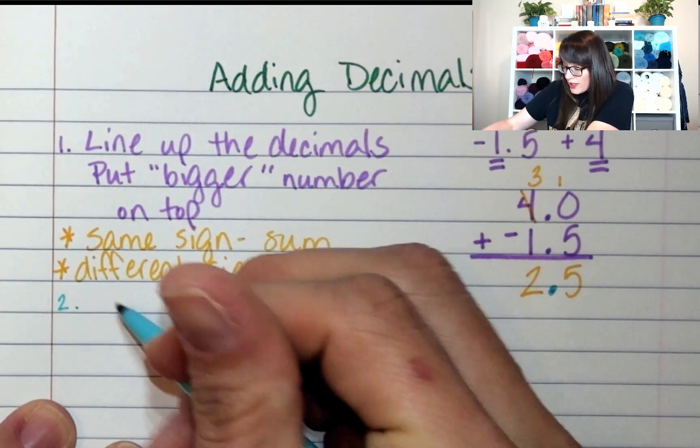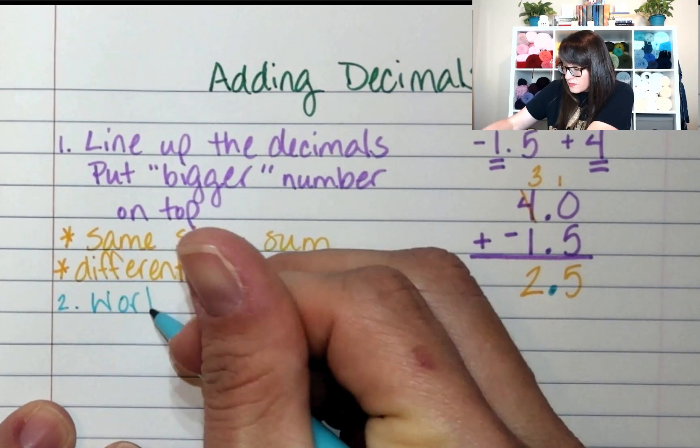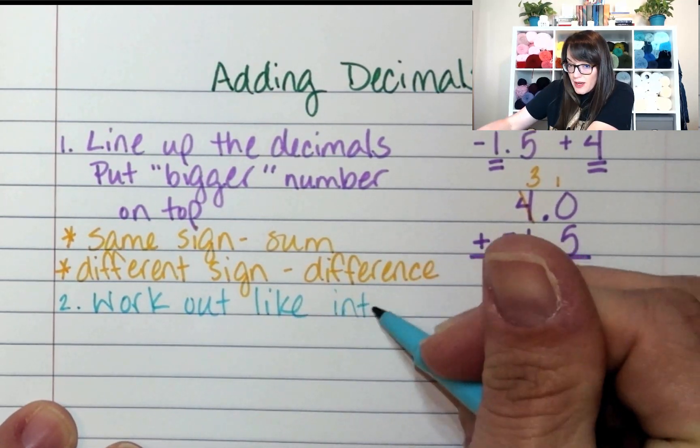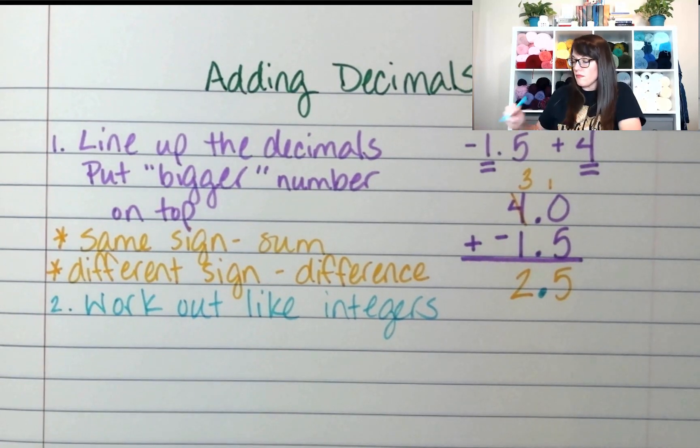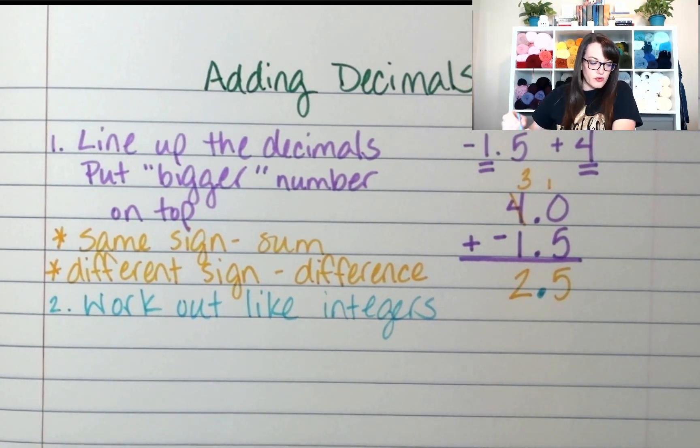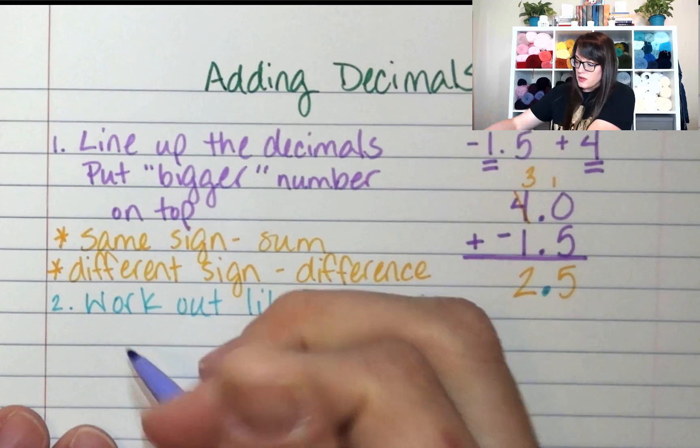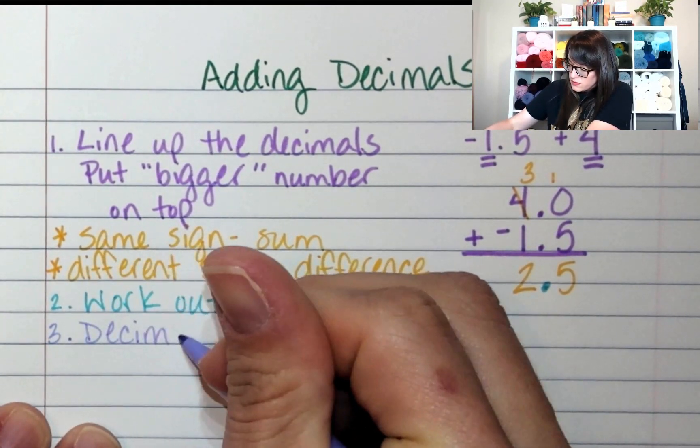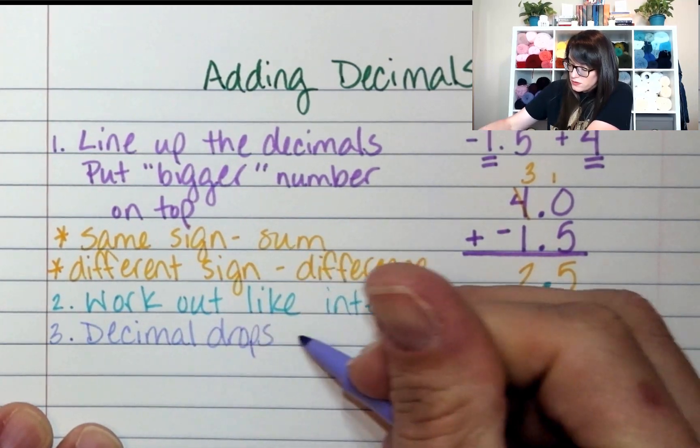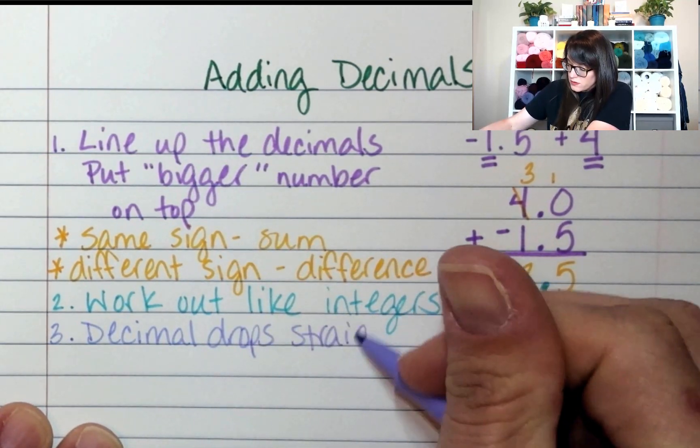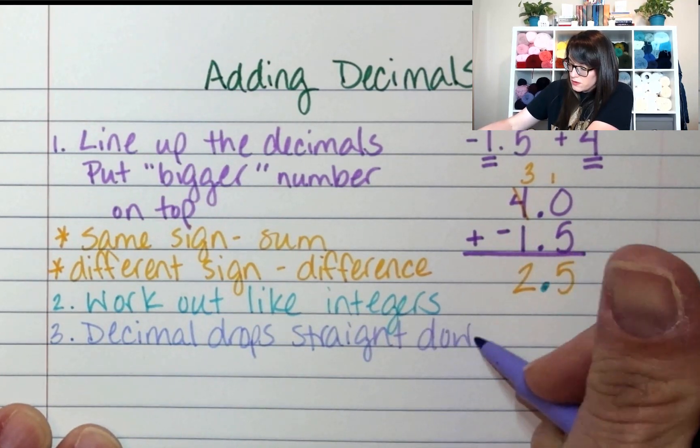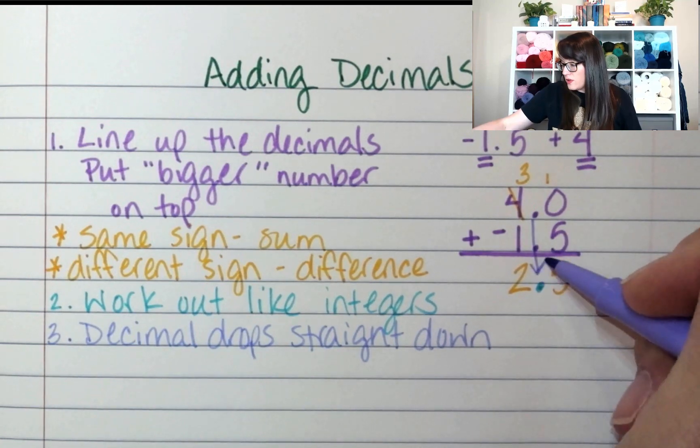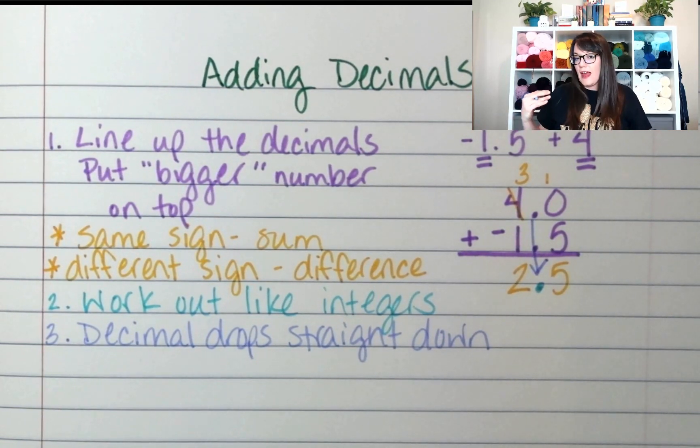So step two, we're going to work it out. We're going to work them out like they're integers. And then we're going to drop the decimal. The decimal is going to drop straight down. Decimal, decimal, straight down, decimal.